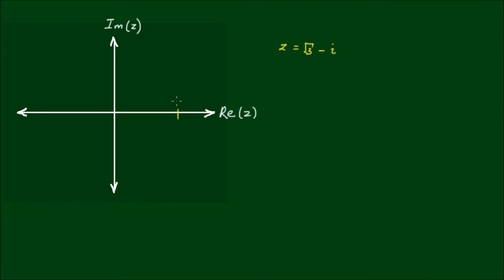So if the square root of 3 is approximately here on the real axis and negative 1 is here on the imaginary axis, then z would be located at the intersection of these values.